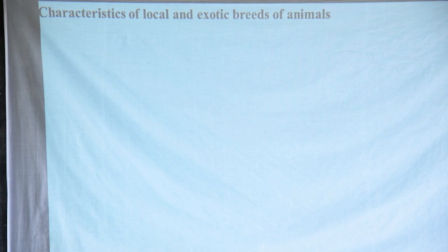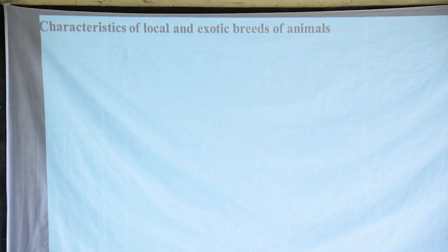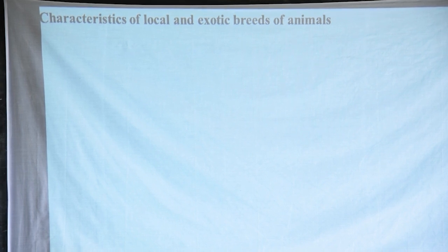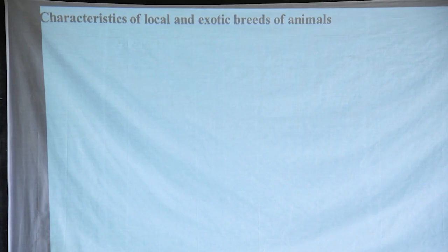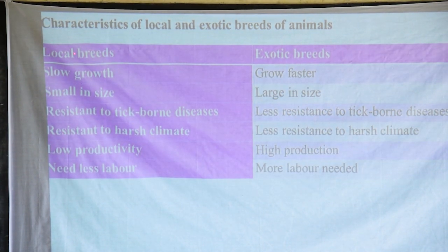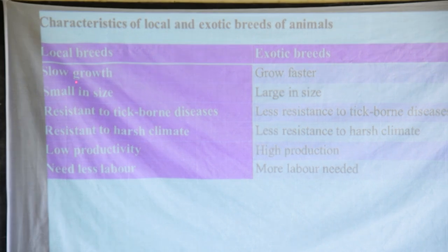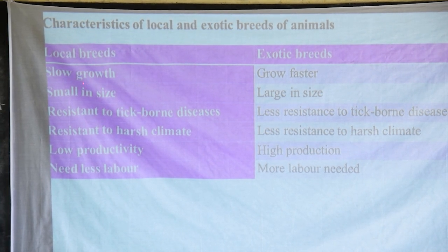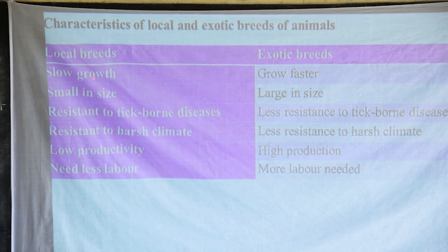This takes us to the characteristics of local and exotic breeds — it is very important to note the features, as these major external and internal features help us identify these animals properly. Looking at local breeds, we see that they have slow growth. Local breeds take a long time to grow — their growth rate is very low compared to exotic ones.